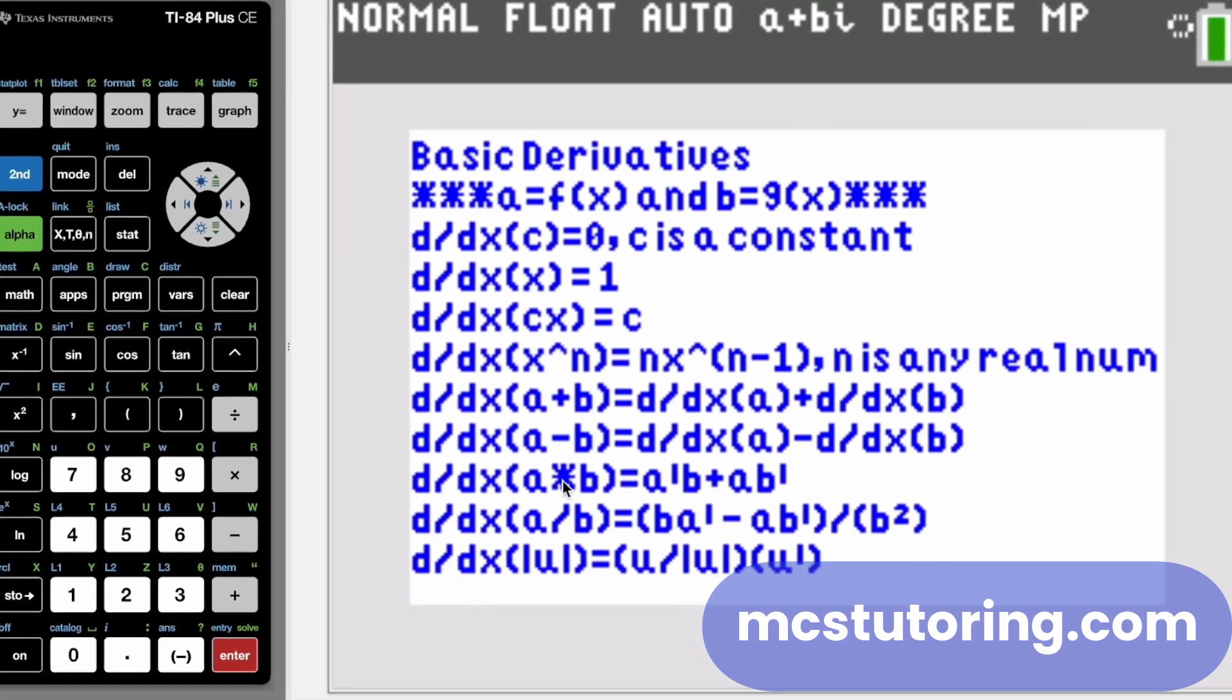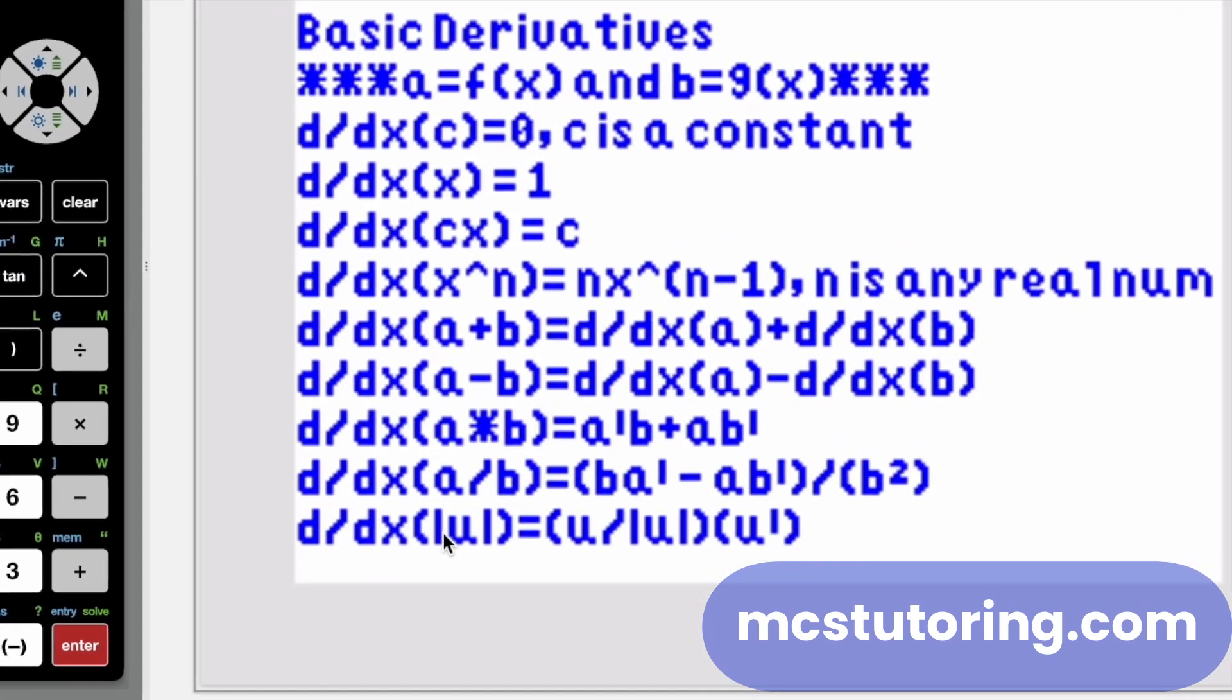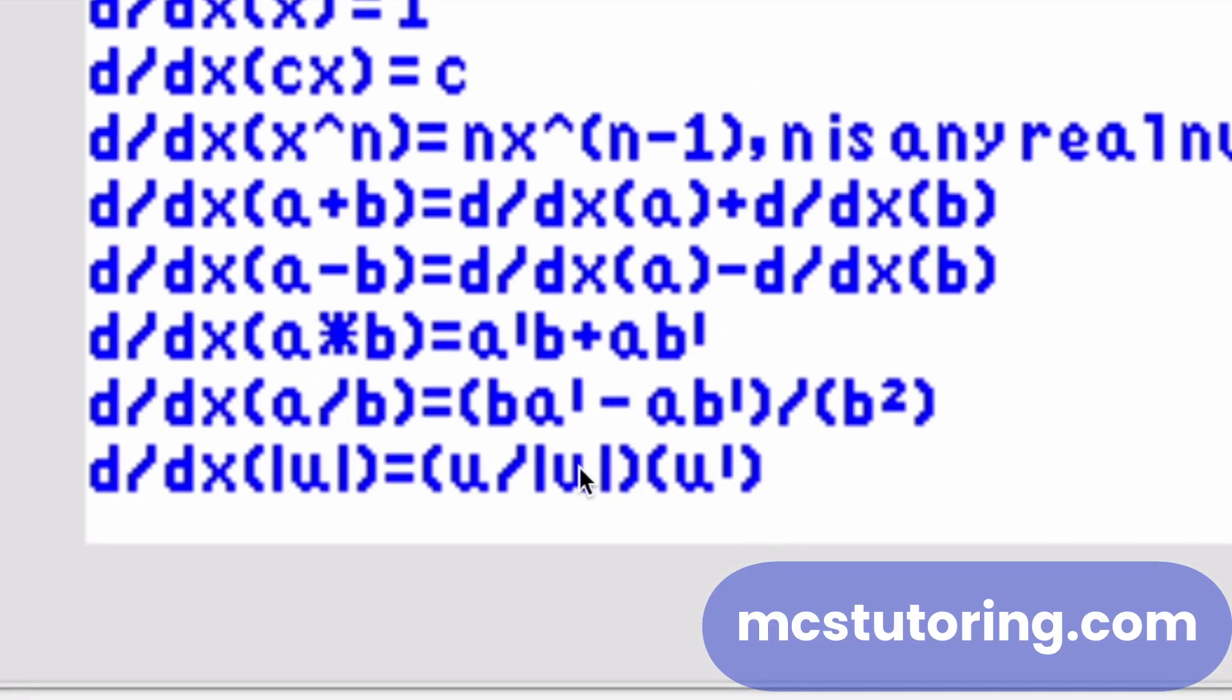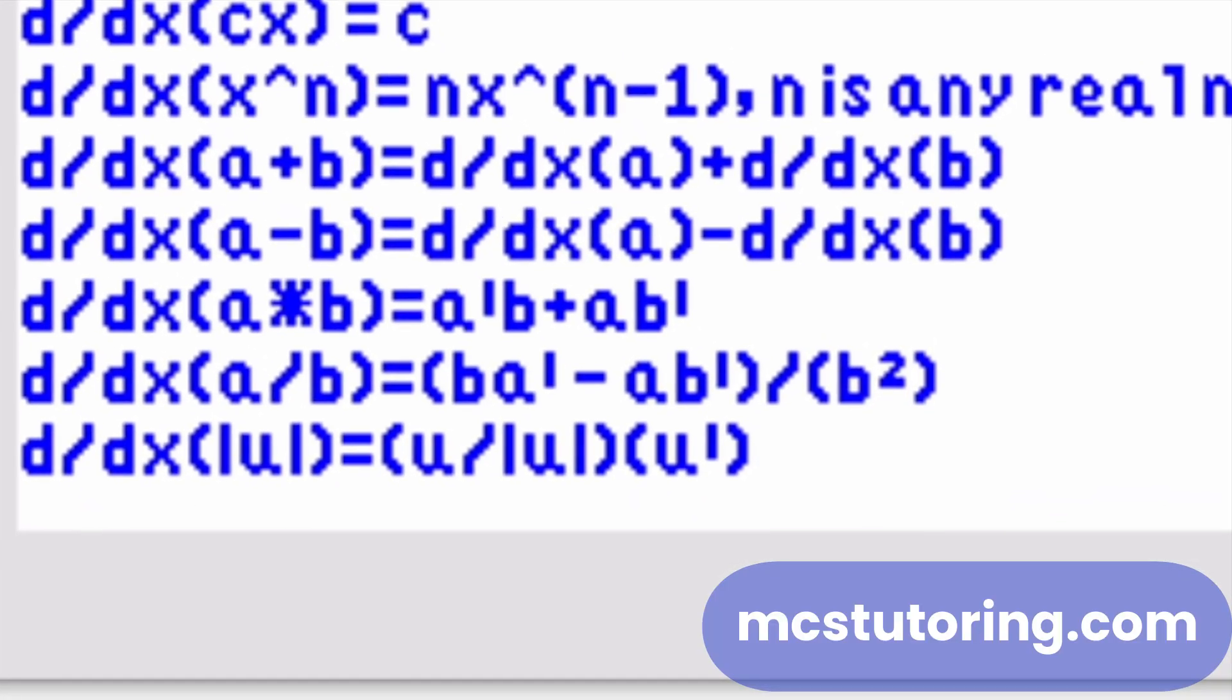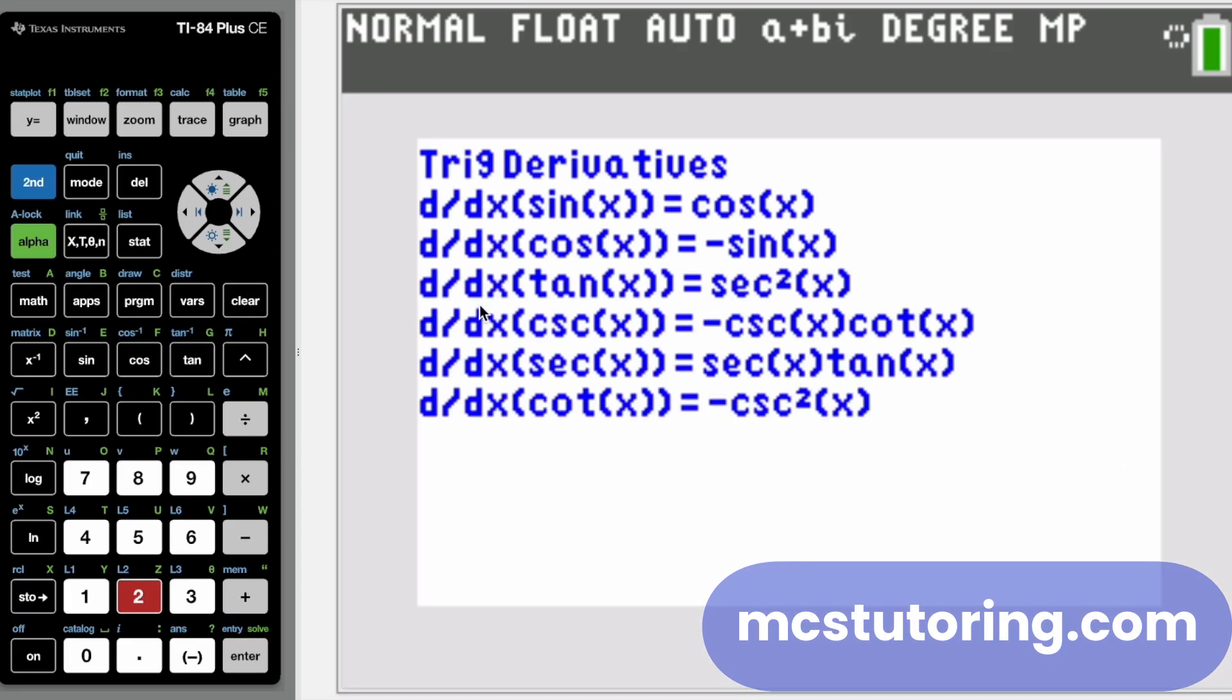So you've got the big thing here, probably the product rule and quotient rule, a little difficult to memorize and the derivative of the absolute value of U. It's pretty cool. U divided by absolute value of U, all that times U prime. So get started right on the basic derivatives and we've got the trig derivatives in their glory, saving you from having to memorize those.